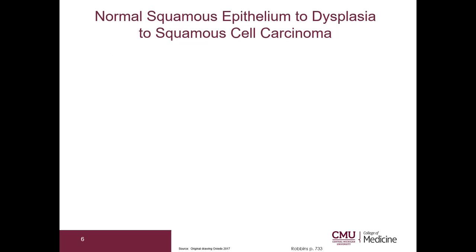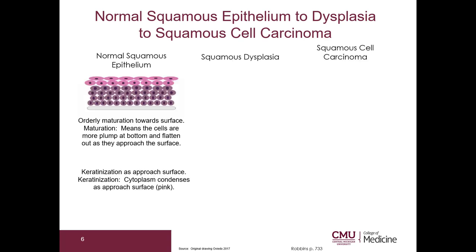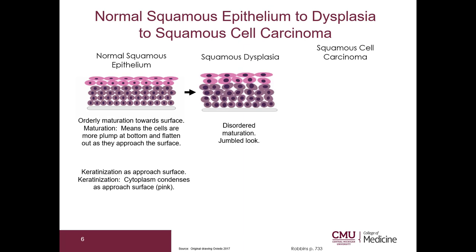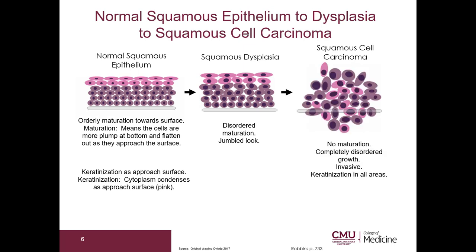Let's take a look at the progression from normal squamous epithelium to squamous dysplasia to squamous cell carcinoma. Here you have a drawing of the squamous epithelium showing orderly maturation — cells are more plump at the bottom and flatten as they approach the surface, with keratinization shown as pink cells. Squamous dysplasia means more disordered maturation and a jumbled look. Squamous cell carcinoma shows no maturation, completely disordered growth, and keratinization in all areas, not just at the surface.